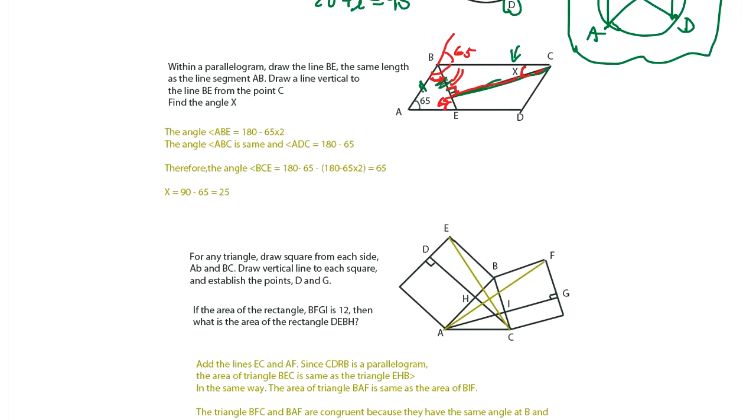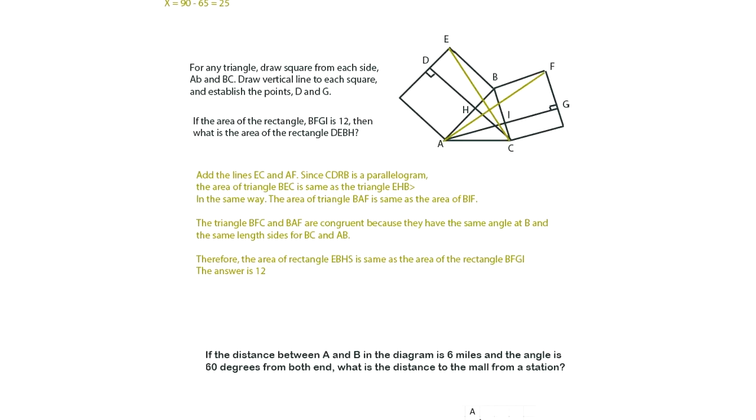Next question. For any triangle, draw a square from each side. AB and BC. Draw a vertical line to each square. This is the vertical line. Establish the points D and G. If the area of the rectangle BFGI, or this part, is 12, then what is the area of the rectangle DEBH?